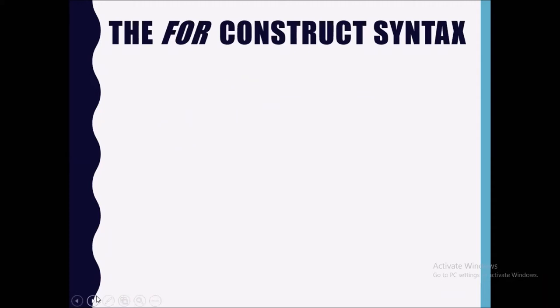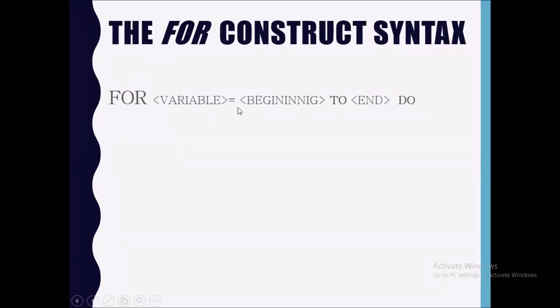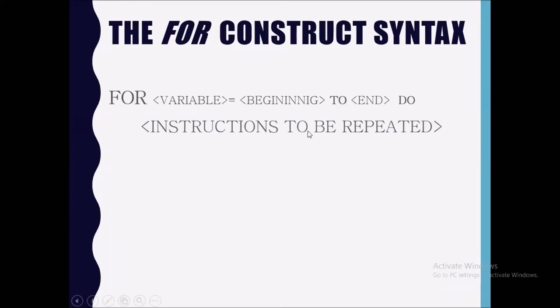So how is the FOR construct laid out? You have the word FOR, followed by your variable name, your starting figure, and your end figure. We use the word TO. So: FOR, variable name, equals, beginning value — one or zero — TO, end value — twelve, seven, whichever the end number is — DO. The instructions to be repeated come within the FOR block, indented. Once you have a FOR, you must have an END FOR.